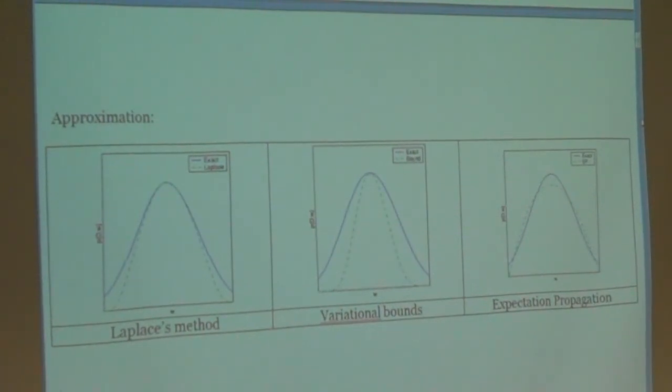Laplace's method, variational bounds and expectation propagation. In the first one we try to find the best point for the mean and try to find the best variance. In the second it's faster and it's an important thing we try to best the mean point and variance.